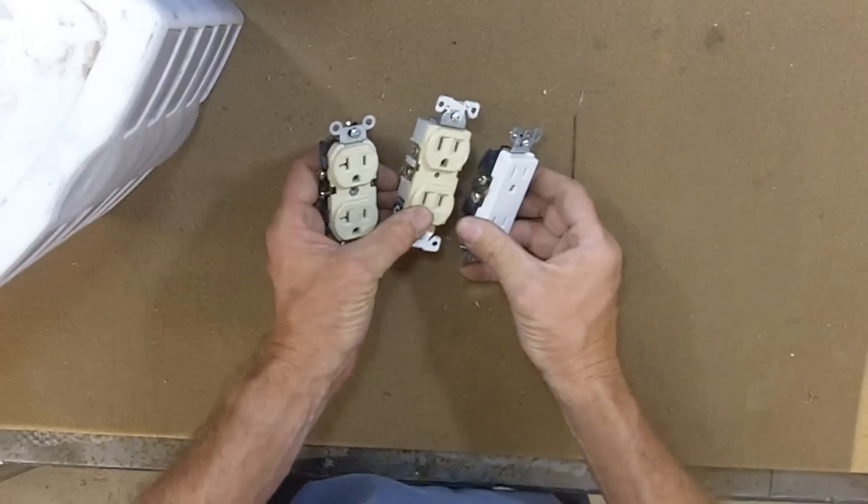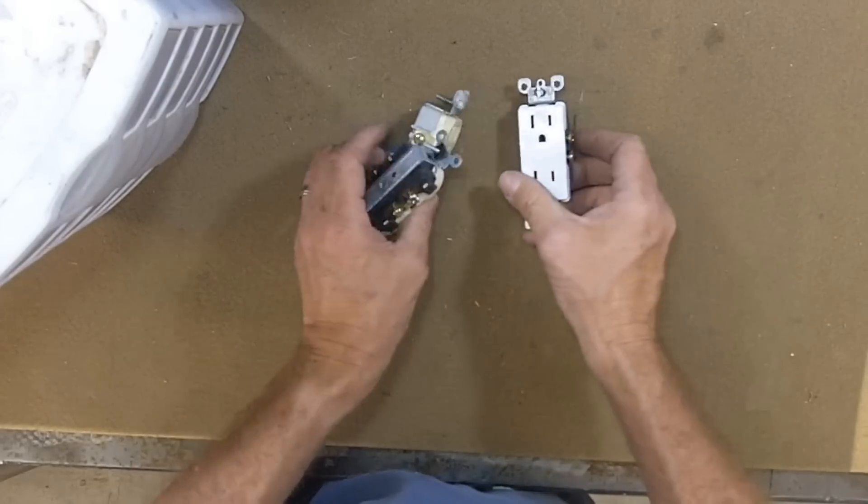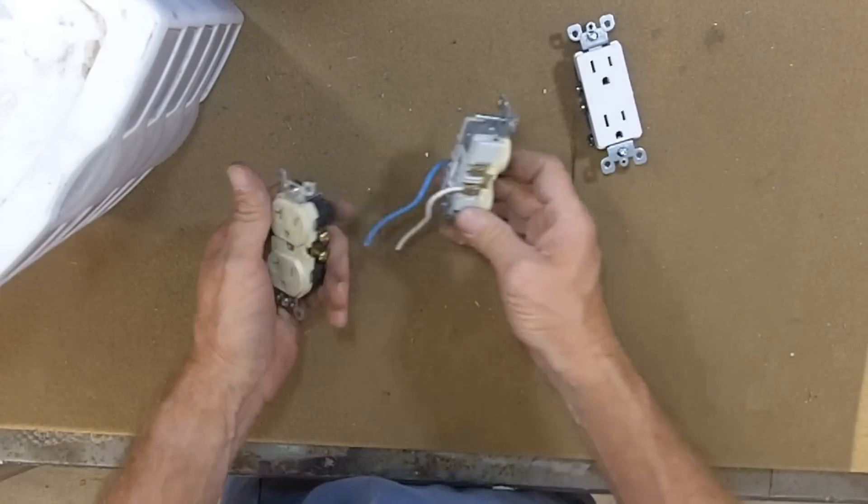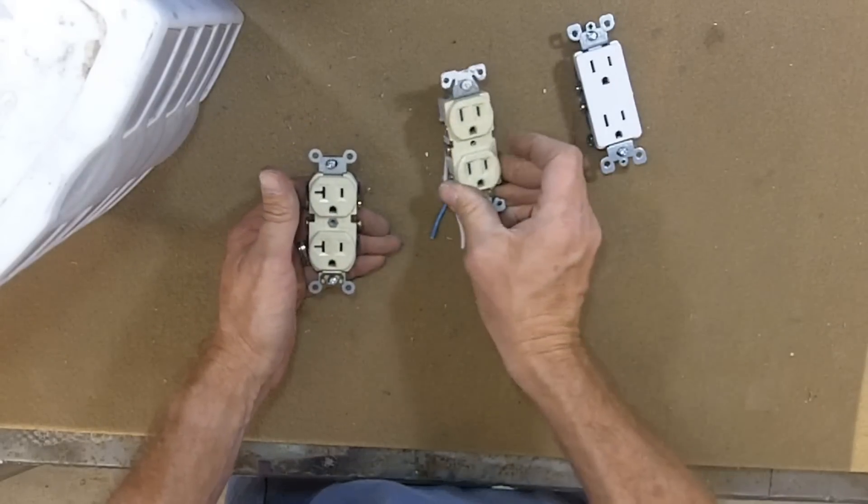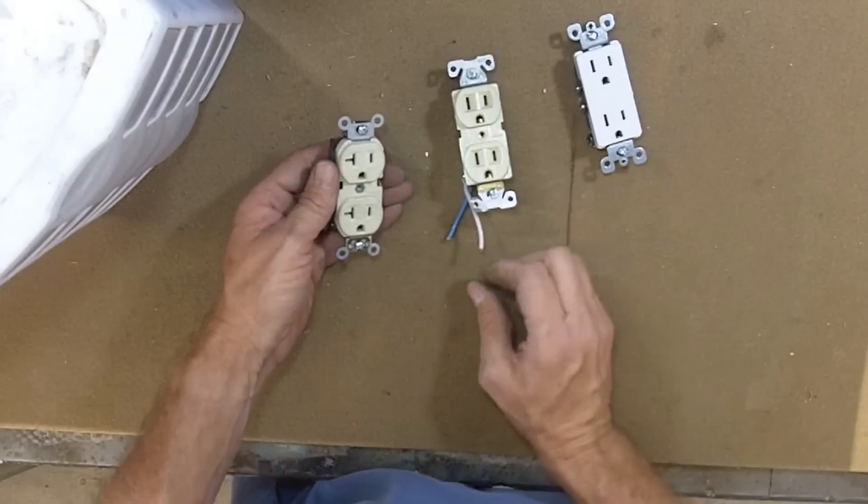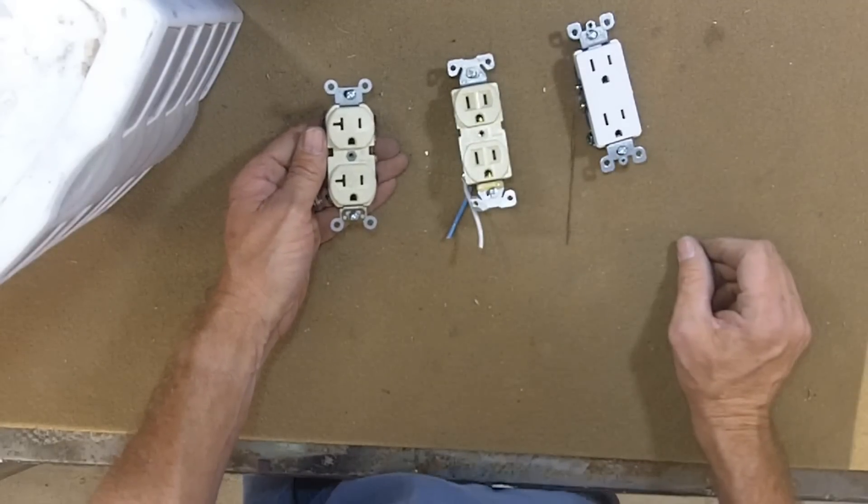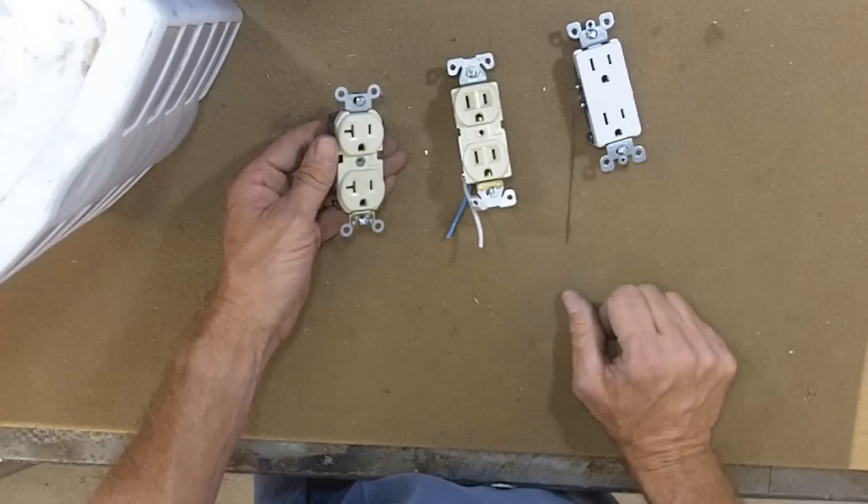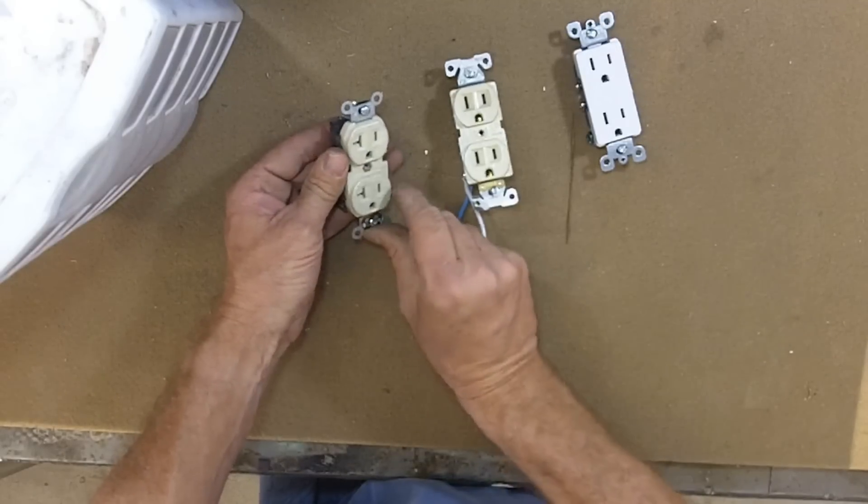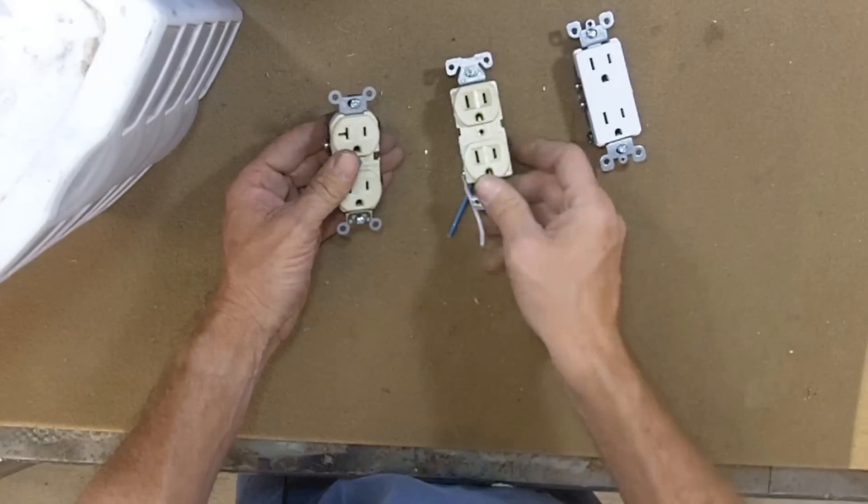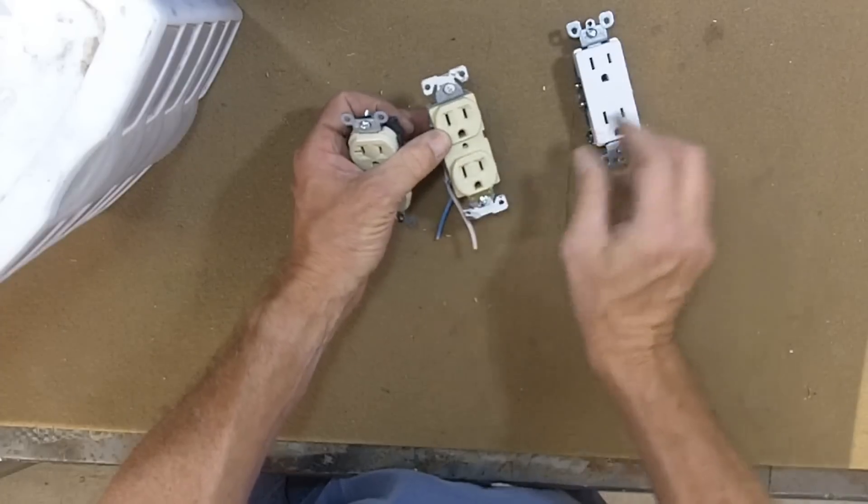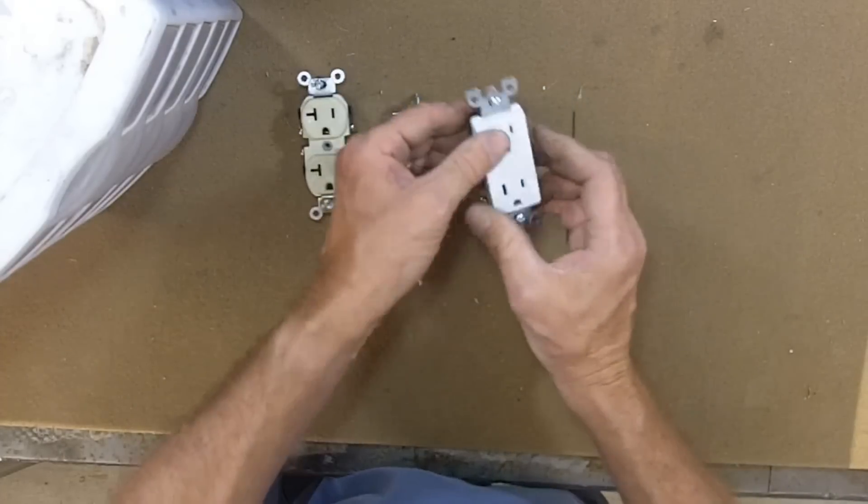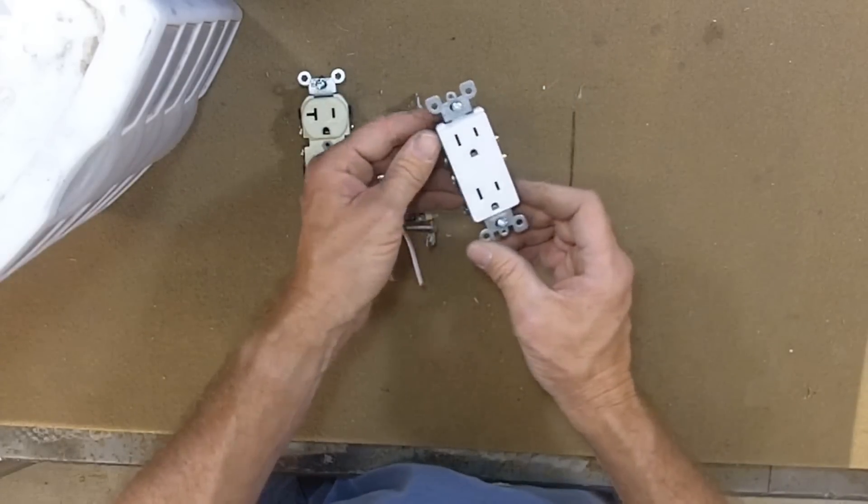What's the difference between these three outlets? Residential, this is more of a heavy commercial, it's only 15 amp, this is a 20 amp. I know it's a 20 amp, it's got the little side bar in there on the neutral side, also tells me right there, 20 amp, 125 volt, 15 amp, 125 volt, and this is just custom residential.